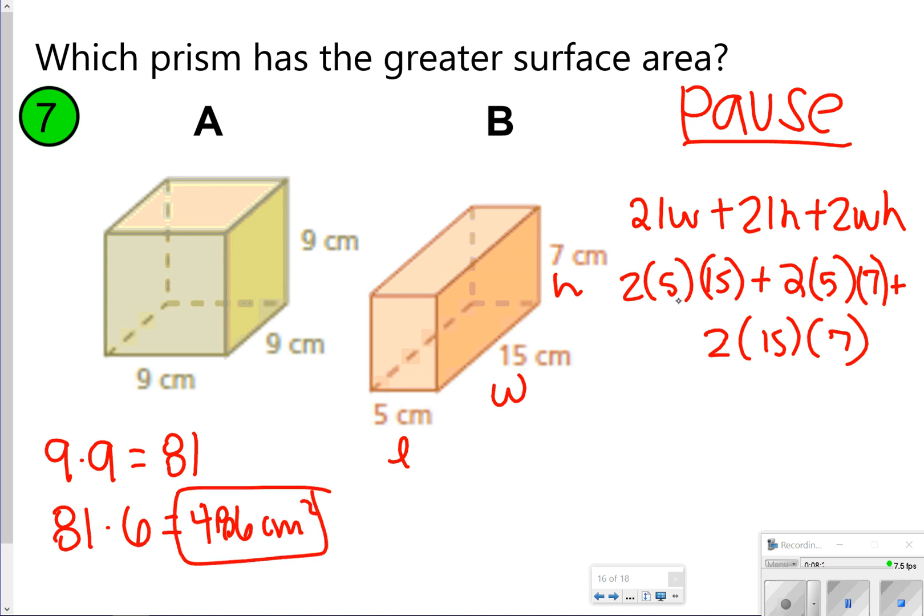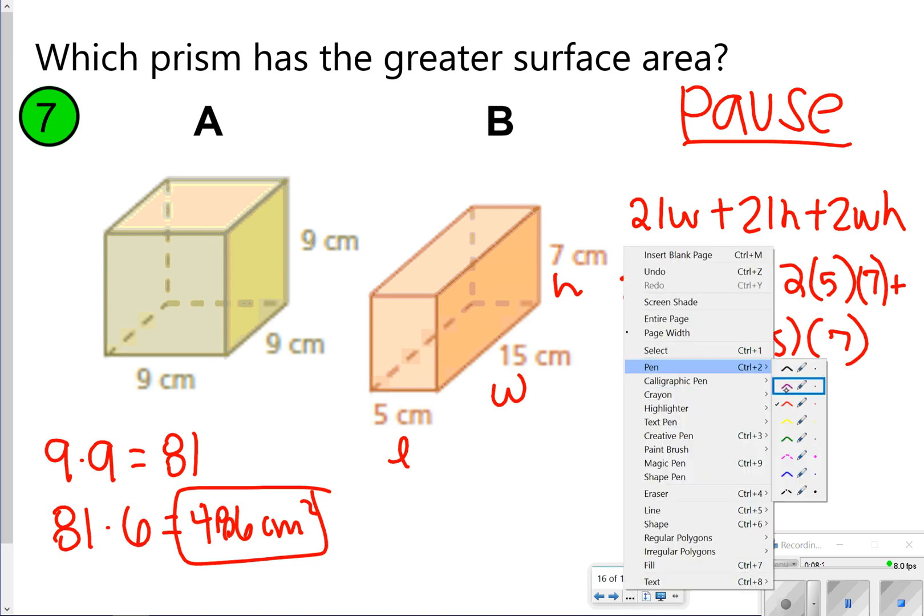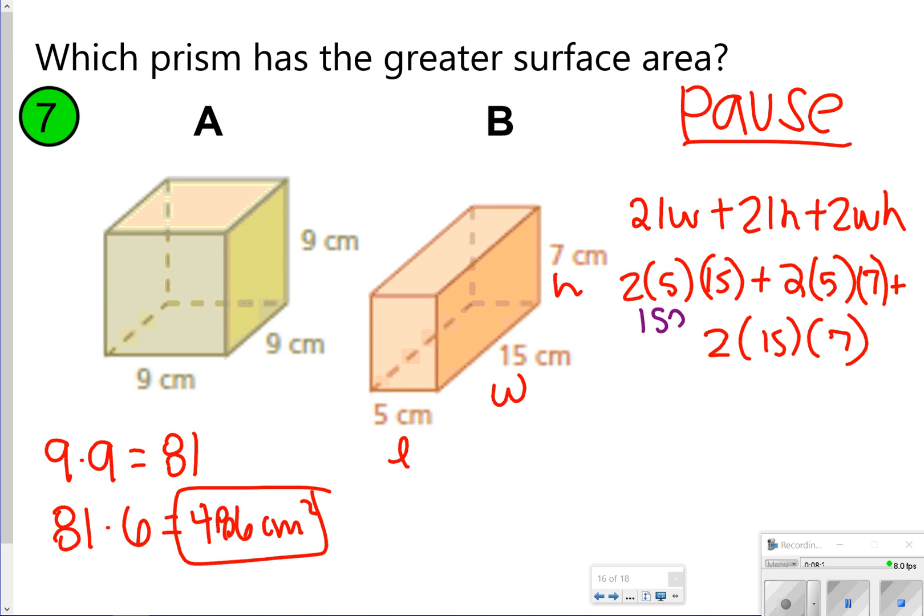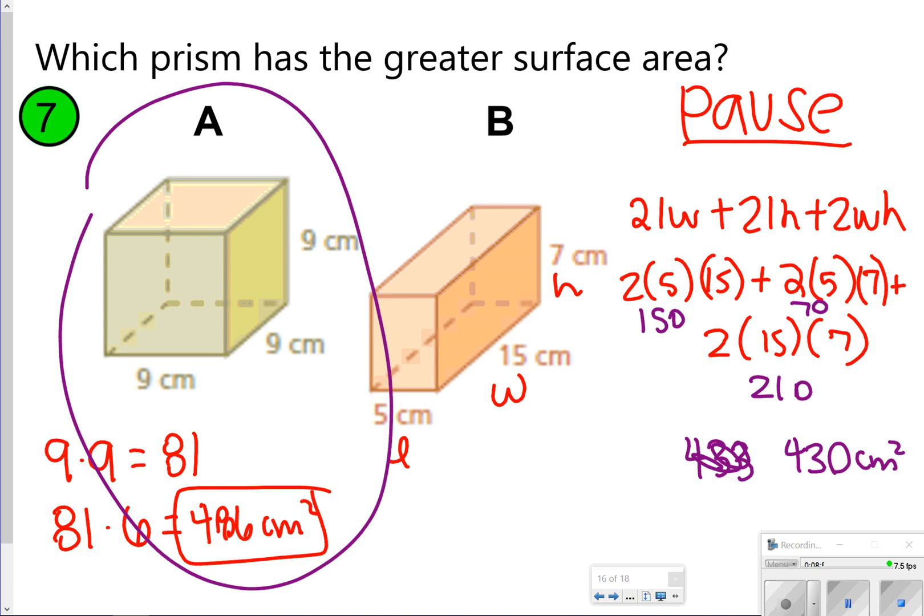Over here I did my formula, 2LW plus 2LH plus 2WH. My 2 times 5 times 15, that's going to give me 150. My 2 times 5 times 7 is going to give me 70, and the other one, 2 times 15 times 7 is 210. I'm going to add 150, 70, and 210 together and I just get 430 centimeters squared. So letter A has the bigger surface area.